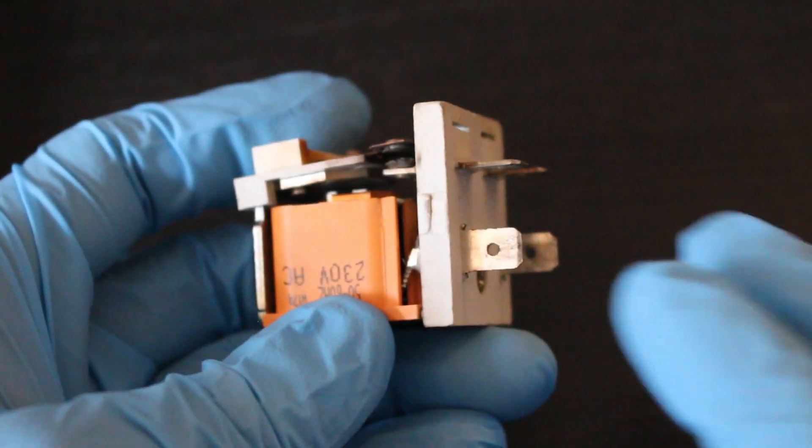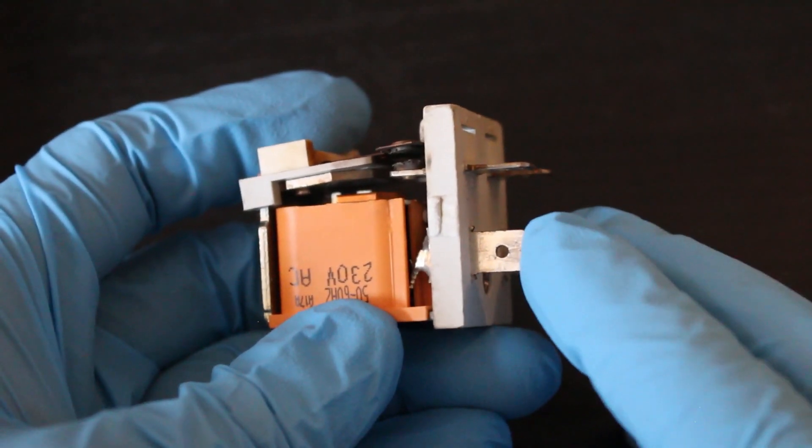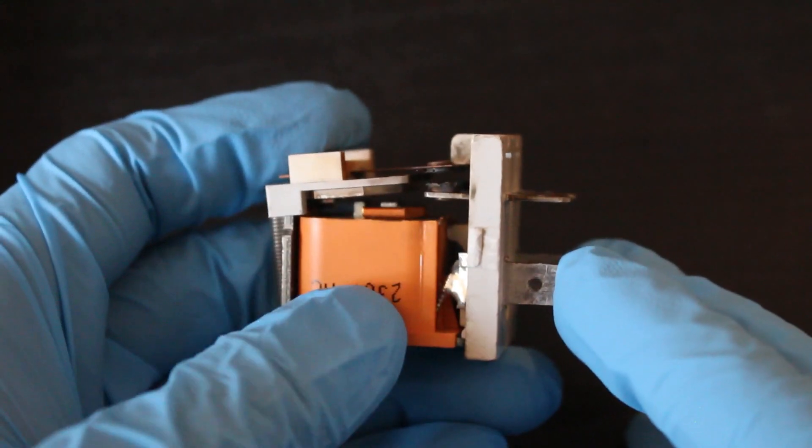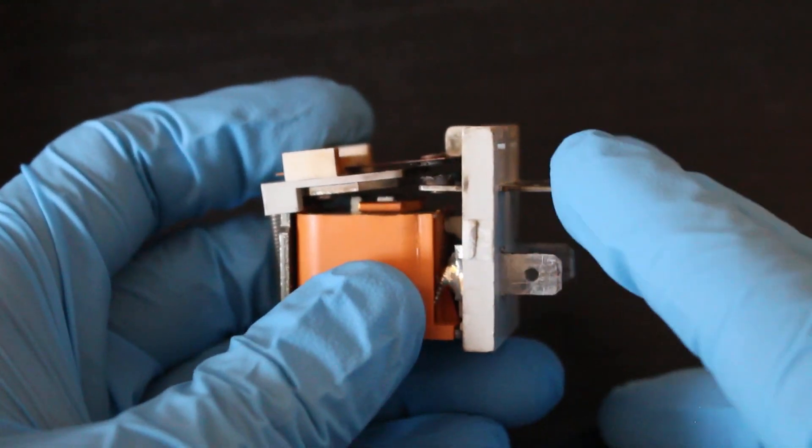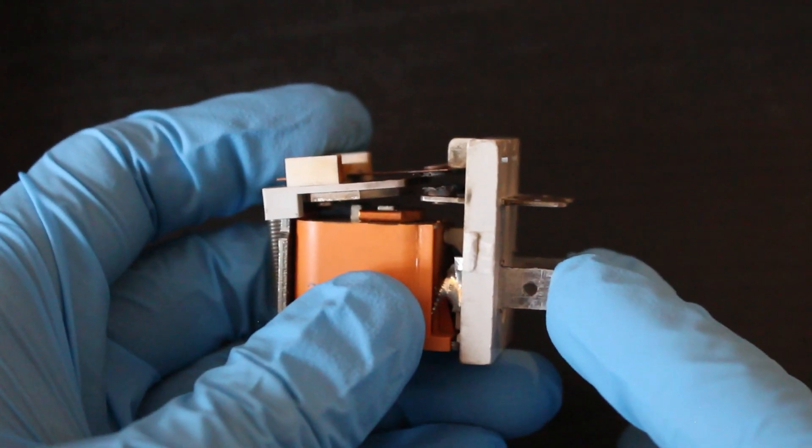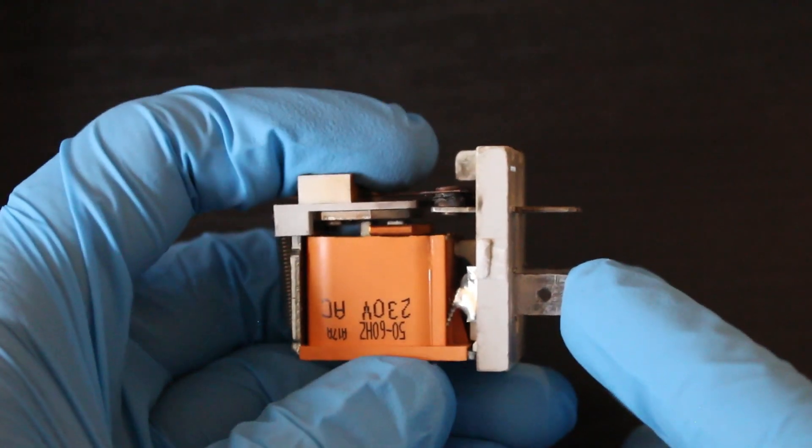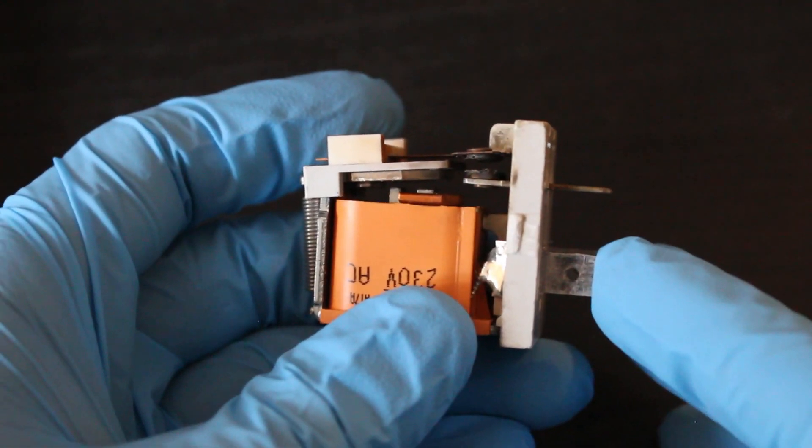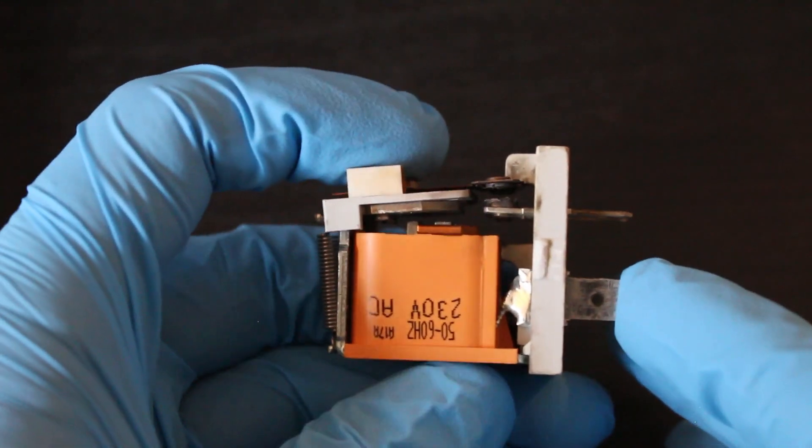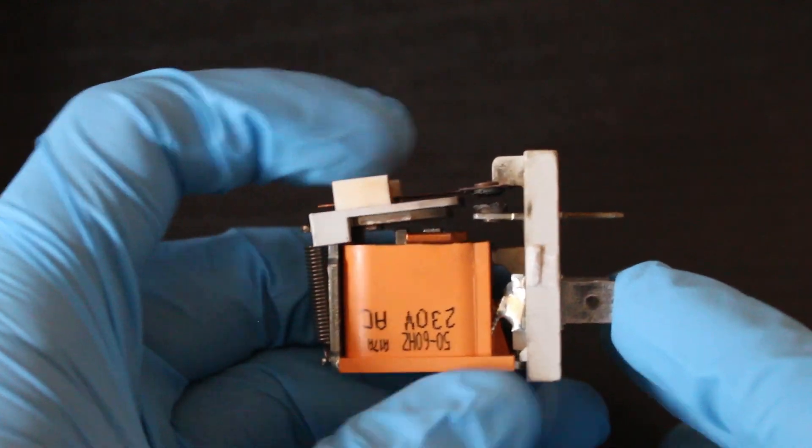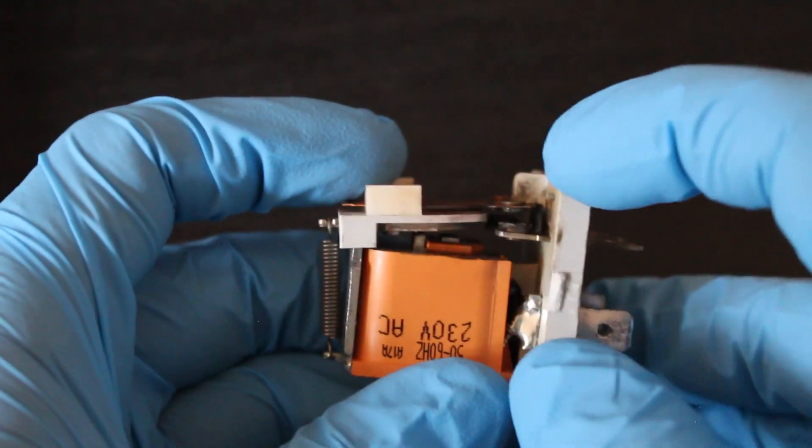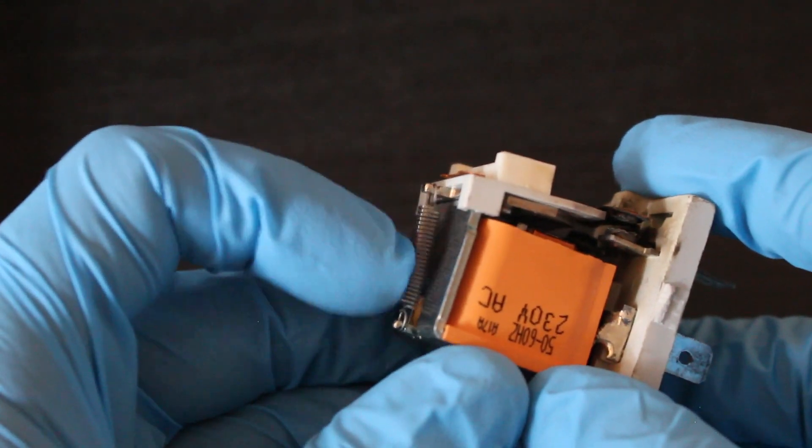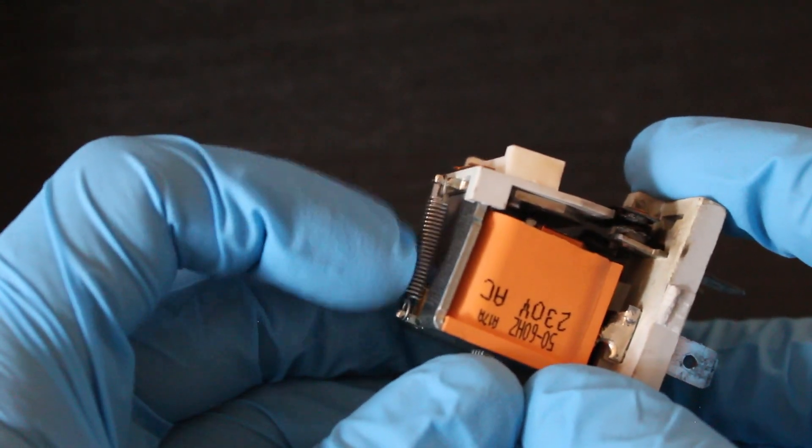The way this operates is when current flows through the coil, a magnetic field is developed around the core. Keep in mind that the set of contacts and the coil are electrically isolated. They're just wound around the same core. So when current flows through this coil, an armature - this piece right here - will close and either open or close a set of contacts when the magnetic field overcomes the strength of this spring.